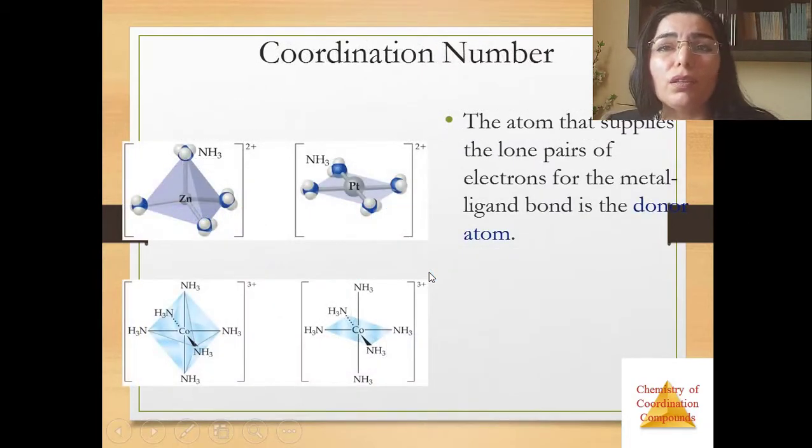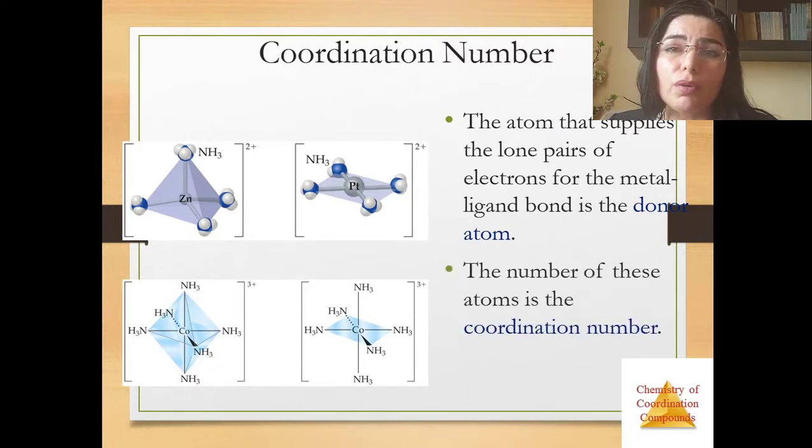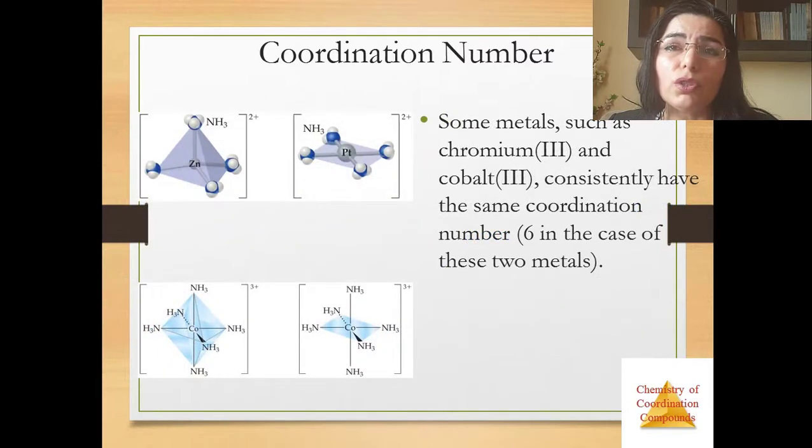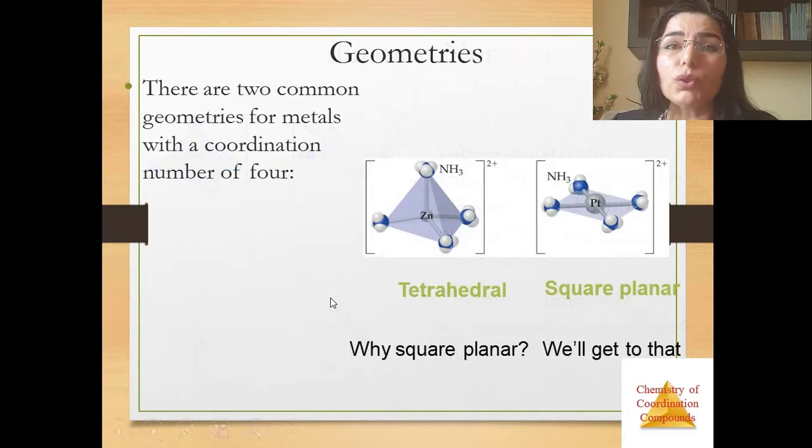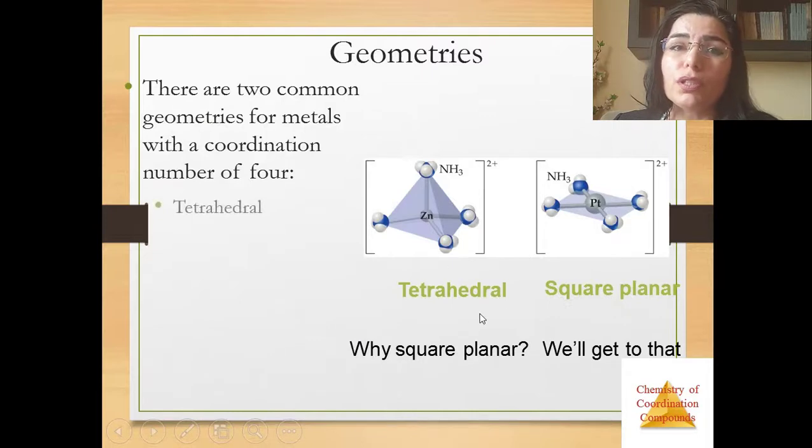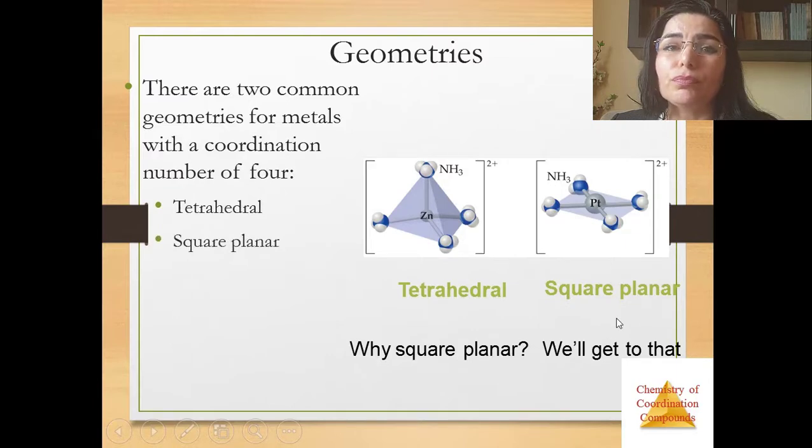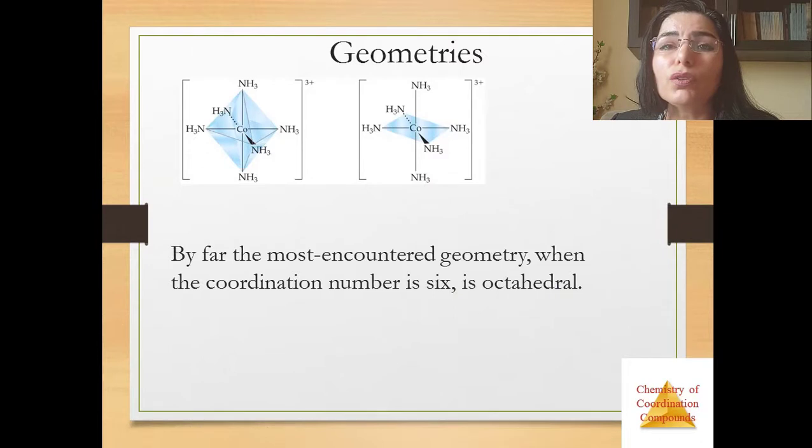The atoms that supply the lone pairs of electrons for the metal ligand bond is the donor atom. The number of these atoms is the coordination number. Some metals such as chromium and cobalt consistently have the same coordination number, six in the case of these two metals. The most commonly encountered numbers are four and six. There are two common geometries for metals with coordination number four: tetrahedral and square planar. By far the most encountered geometry when the coordination number is six is octahedral.